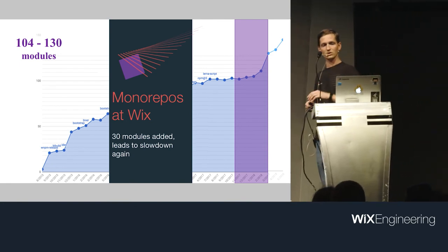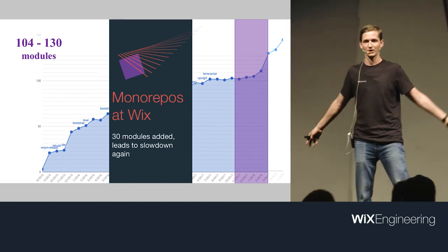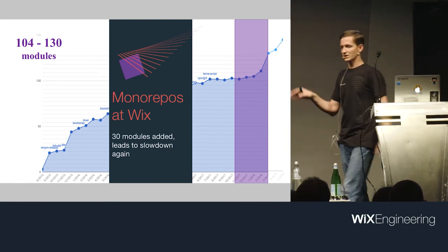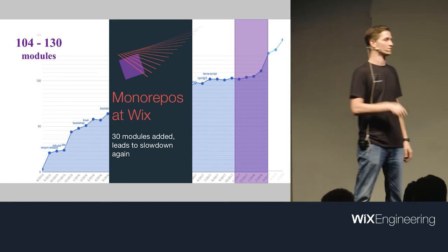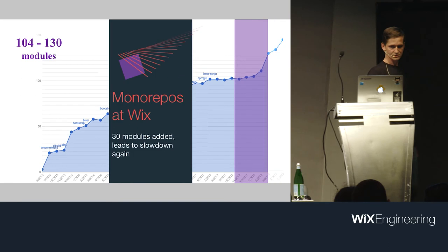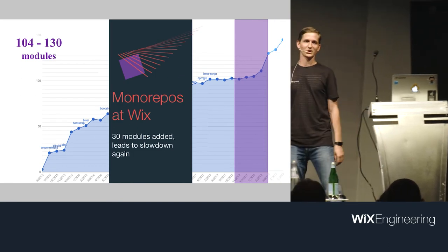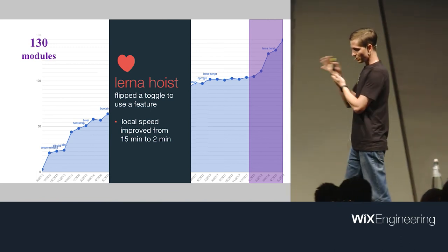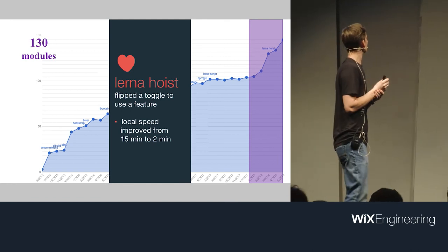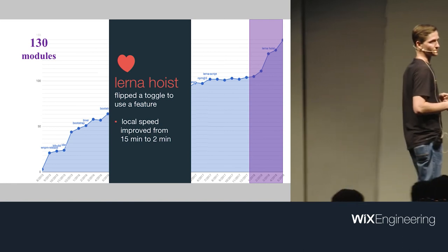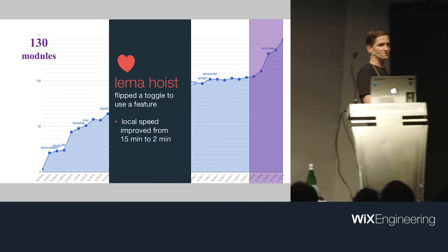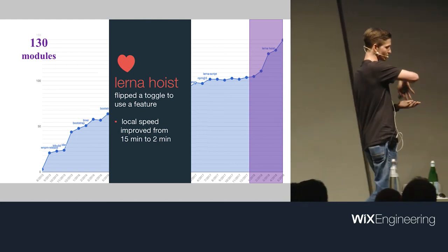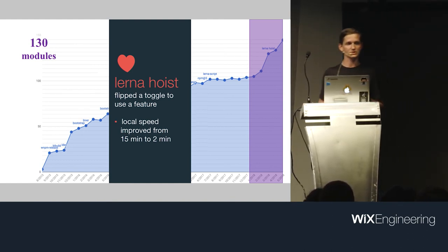From around 104 to 130 modules, we got the monorepo mandate — I had to move some free-floating modules into Wix Node Platform. Adding them made things slow again. But by using Lerna and just toggling a feature — hoisting — my NPM install on the repo went from 15 to 2 minutes. So, using existing crowd wisdom and building on established tools really pays off.